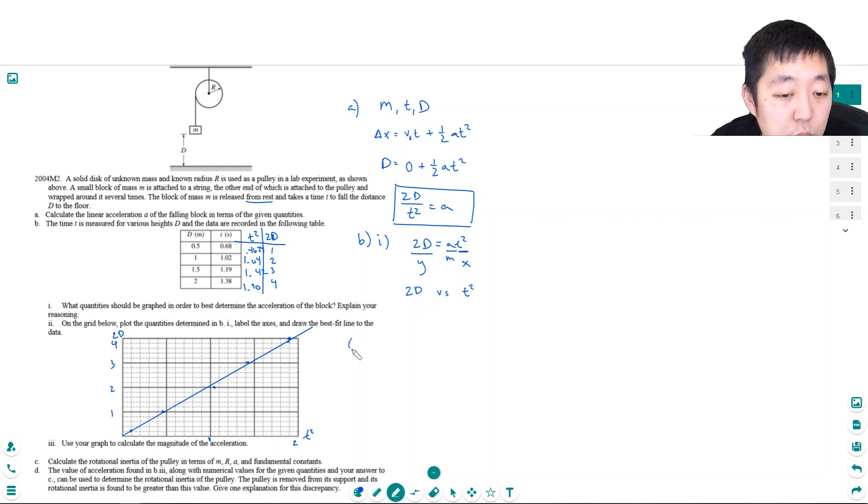So this point over here is 1.9. And the y value is about 3 point, each of these is 0.2. So we'll call it about 3.9. And this point down here is the point 0.1. And the y value is about 0.2. So we're going to do 3.9 minus 0.2 over 1.9 minus 0.1. Let's see what we get. 4.11 meters per second squared. Cool.